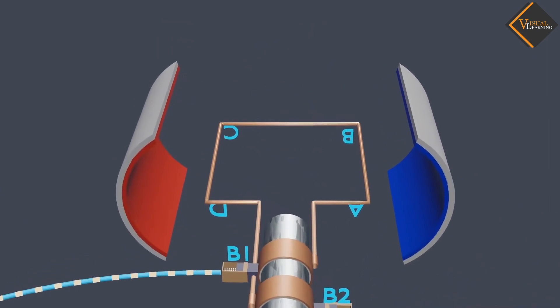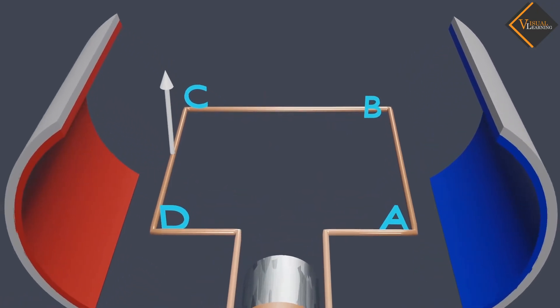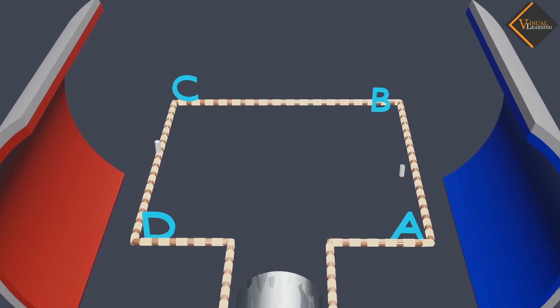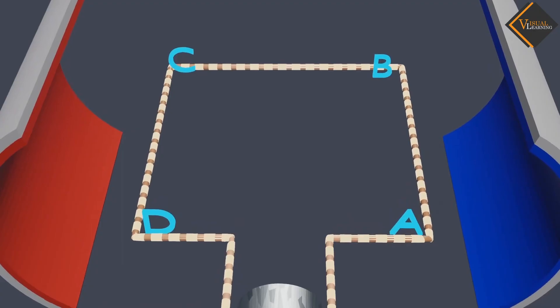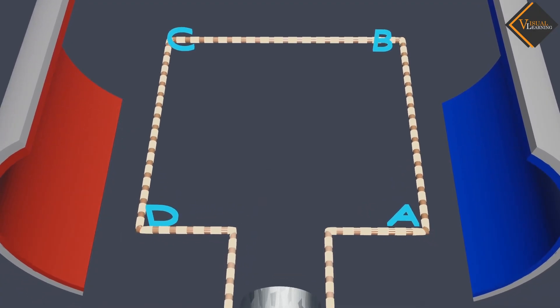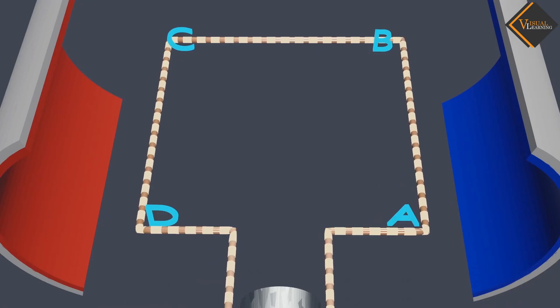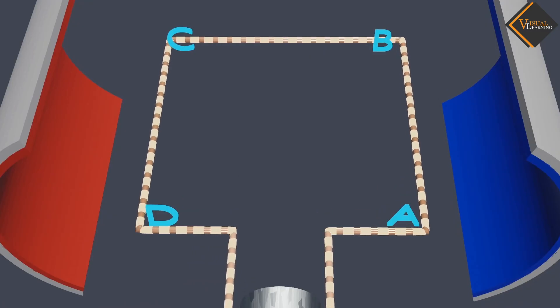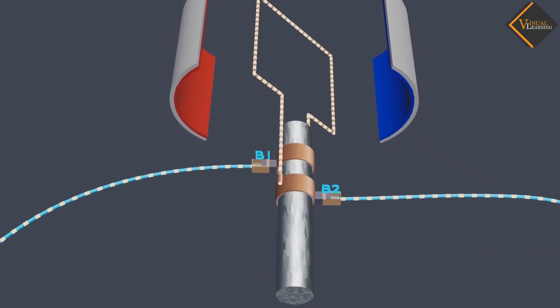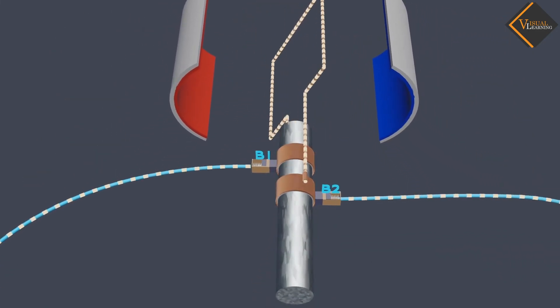After half a rotation, arm CD starts moving up and arm AB starts moving down. As a result, the directions of the induced currents in both arms change. This gives rise to the net induced current in the direction DCBA. The current in the external circuit now flows from B1 to B2.